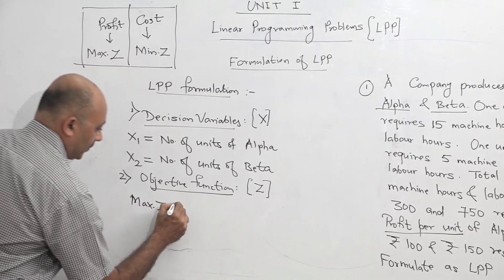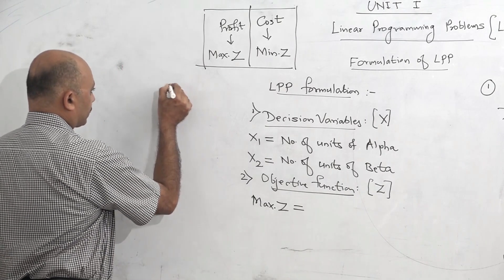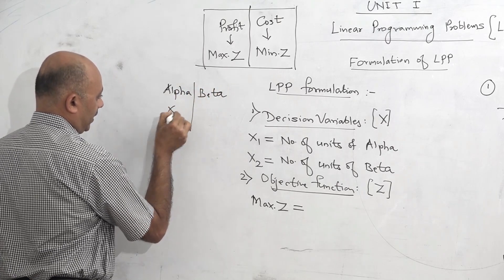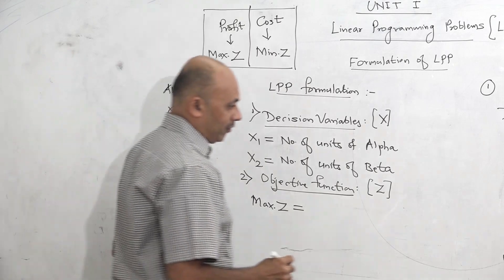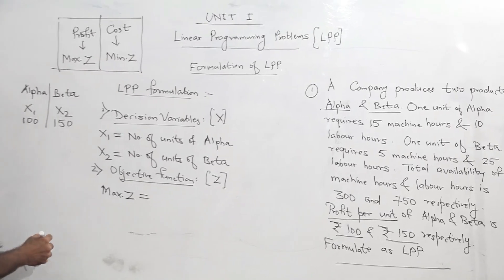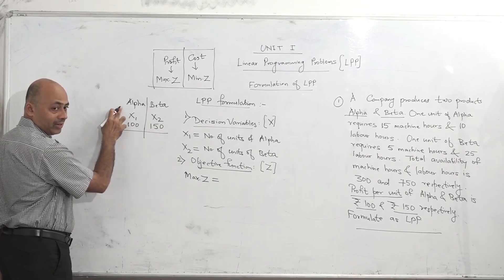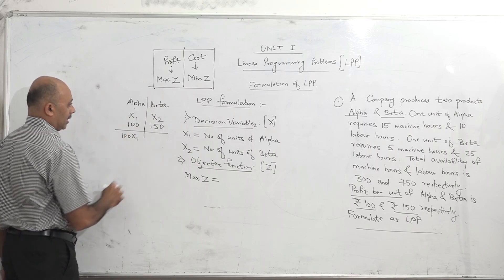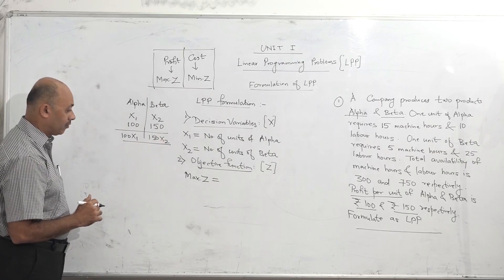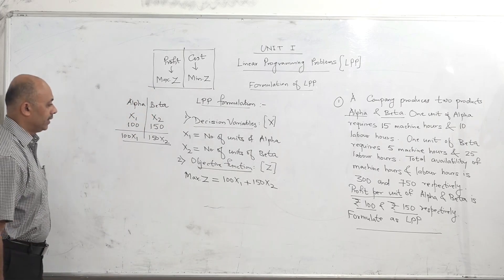The right-hand side of the objective function is represented in terms of x1 and x2. Alpha is represented by x1 and beta by x2. The profit per unit is rupees 100 and rupees 150. Profit of alpha is 100, profit of beta is 150. We are going to produce x1 units of alpha, so total profit of alpha is 100x1. Total profit of beta is 150x2. So max Z equals 100x1 plus 150x2.